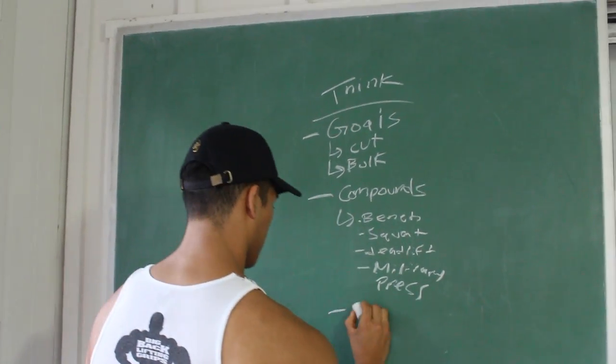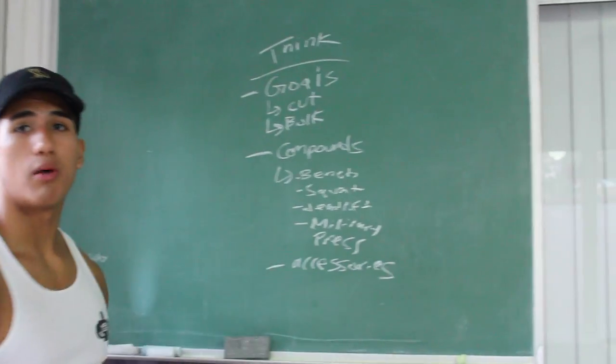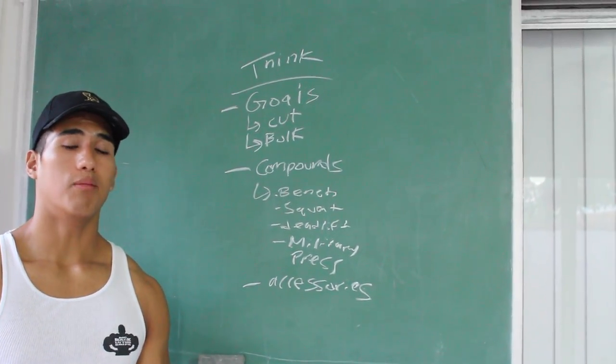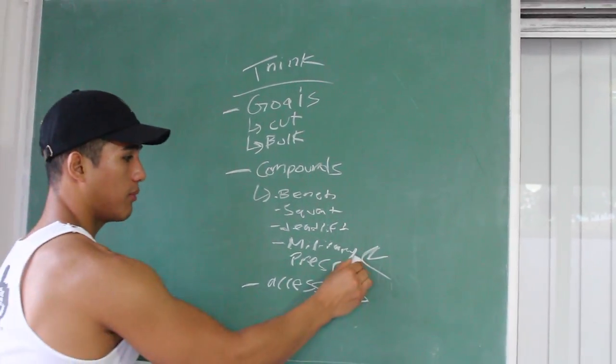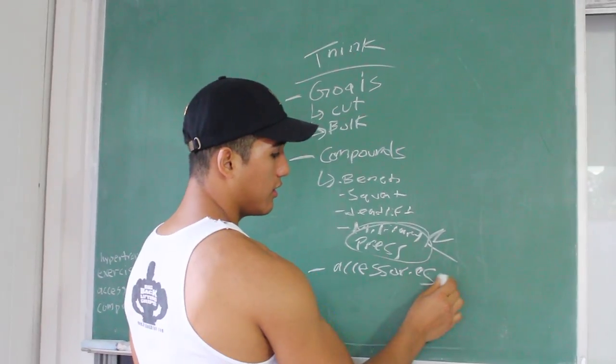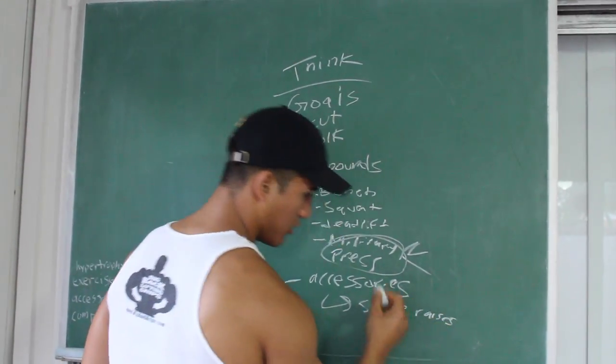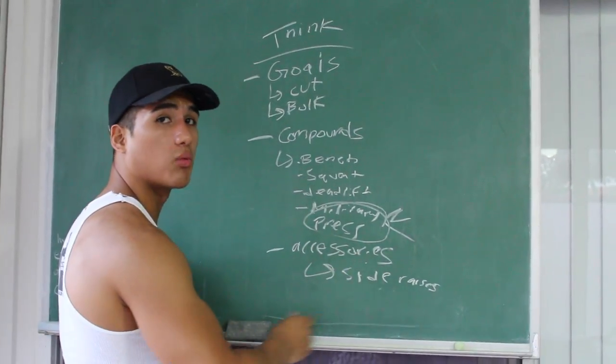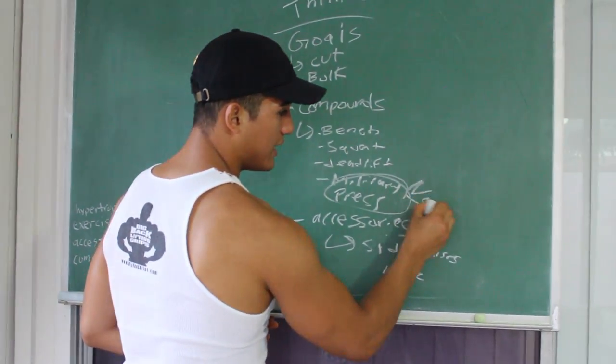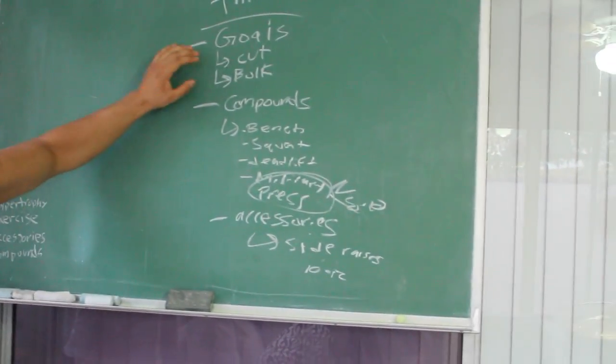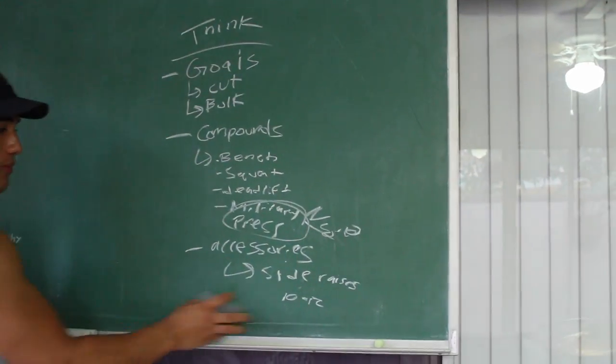And lastly, your accessories. Accessories being the smaller movements. So let me give you an example. Side raises would be an accessory to something like a military press. So your military press would be your compound, you would do maybe four sets here. And for your accessory you would do side raises, maybe the same sets but the reps are going to be completely different. Because here you might do 10 to 12, and then here you might do 8 to 10. But that's all going back to what are your goals, if you're cutting or bulking. You got to think about all these things right here - your goals, if it's a compound or accessory movement.